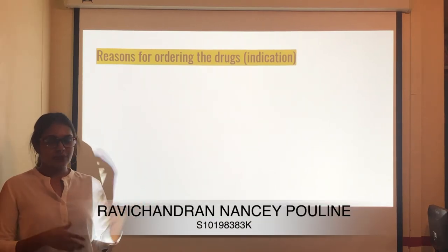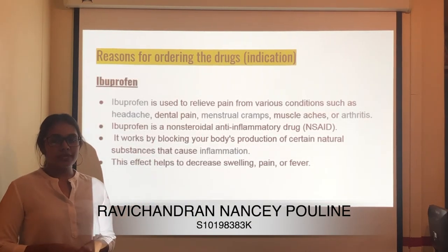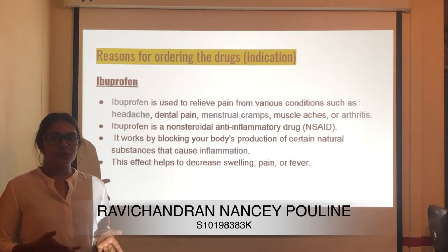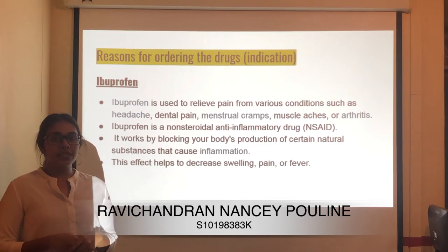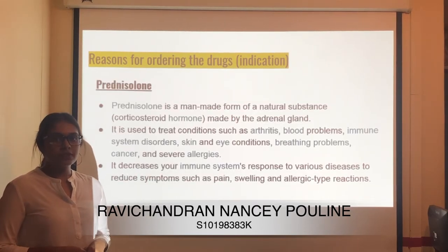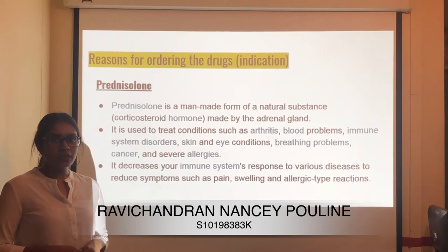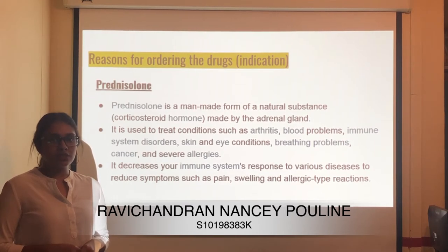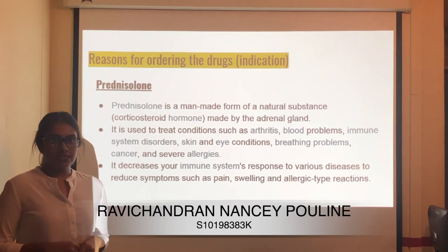Drug indications: first, ibuprofen is used to relieve pain from conditions such as headache, dental pain, menstrual cramps, muscle aches, or arthritis. Ibuprofen is a non-steroidal anti-inflammatory drug that works by blocking the body's production of natural substances that cause inflammation, helping to decrease swelling, pain, and fever. Next, prednisolone is a man-made corticosteroid hormone made by the adrenal gland, used to treat arthritis, blood problems, immune system disorders, skin and eye conditions, breathing problems, cancer, and severe allergies. It decreases the immune system's response to various diseases to reduce symptoms such as pain, swelling, and allergic reactions.